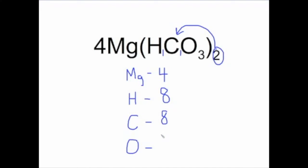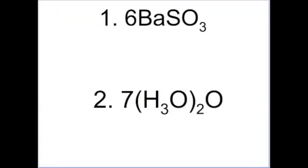There are three oxygens in parentheses, but a two outside the parentheses means there are two bicarbonate ions, each with three oxygens, for a total of six oxygens. The coefficient of four means four times two times three is 24 total oxygens. Try these two examples on your own — pause the video, do your work, then check your answer.